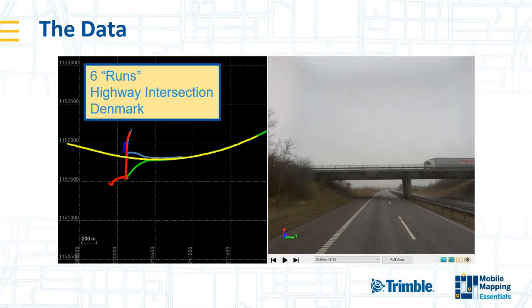The data we're going to look at in this webinar is a fairly typical mobile mapping survey. With mobile mapping you can do very long and large projects, and a common use case is rehabilitation of a highway intersection or road junction requiring a detailed survey. We recorded data here in six runs — the colors on the left-hand side show the different runs made in both directions on both roads and also the slip roads.